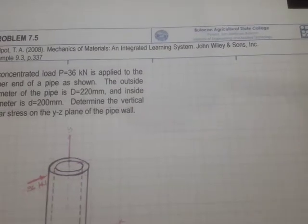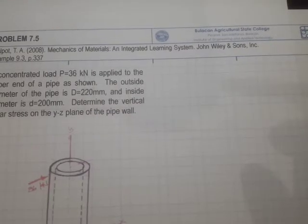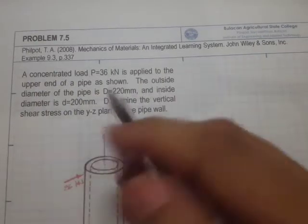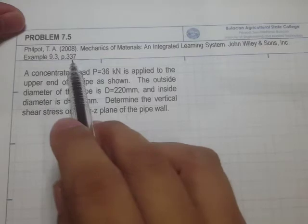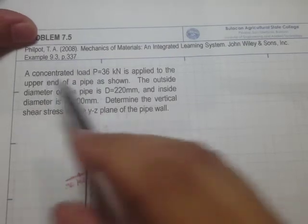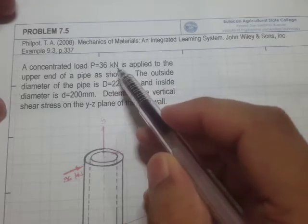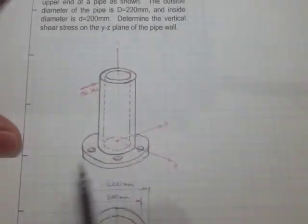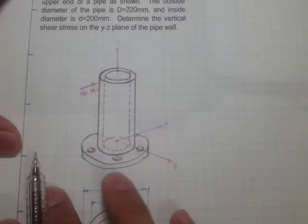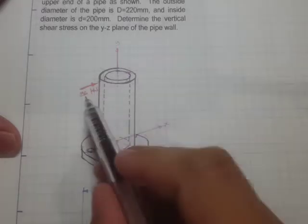Welcome back. This will be our last sample problem for our topic on stresses in beams. This problem is taken from the textbook by Philpot, Example 9.3, page 337. A concentrated load P = 36 kN is applied to the upper end of the pipe. The pipe is bolted at a fixed support.